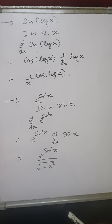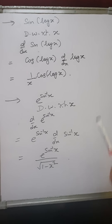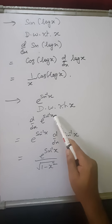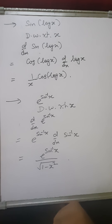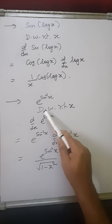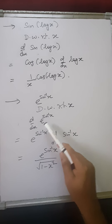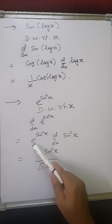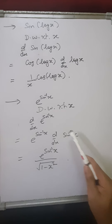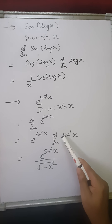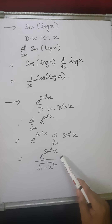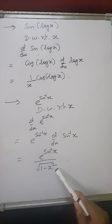The next question is to find the derivative of e to the power sin inverse x. Differentiating with respect to x: d by dx of e to the power sin inverse x. Since d by dx of e to the power x is e to the power x, applying the chain rule and assuming sin inverse x as the inner function, we get e to the power sin inverse x. Then differentiating sin inverse x: d by dx of sin inverse x is 1 upon under root of 1 minus x squared. So the answer is e to the power sin inverse x, upon under root 1 minus x squared.